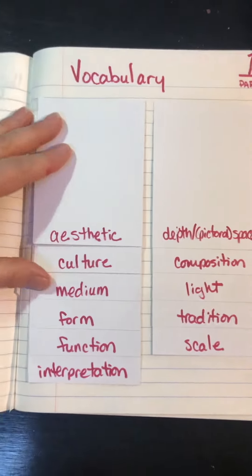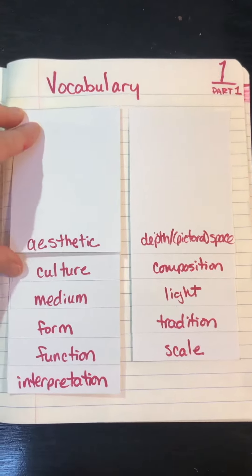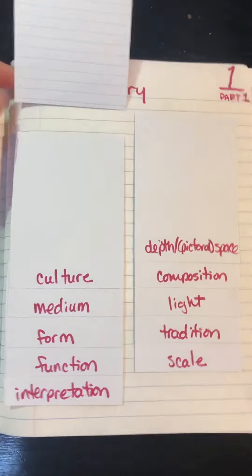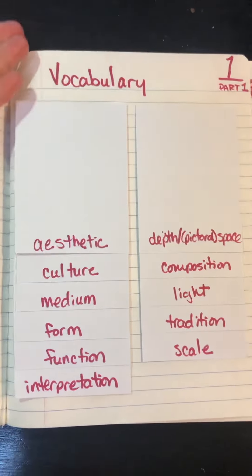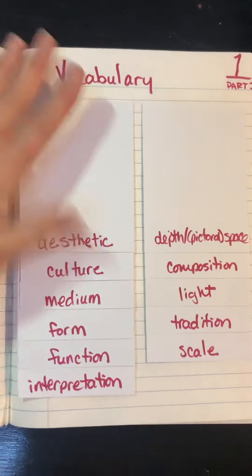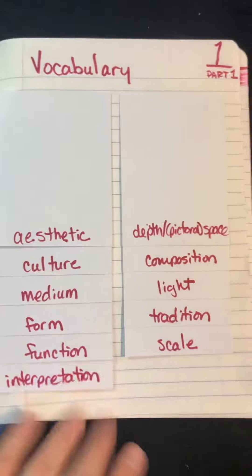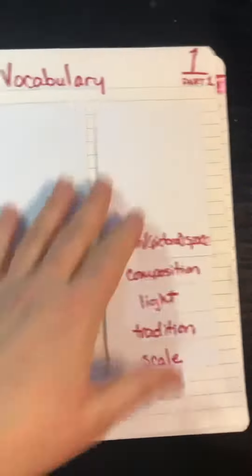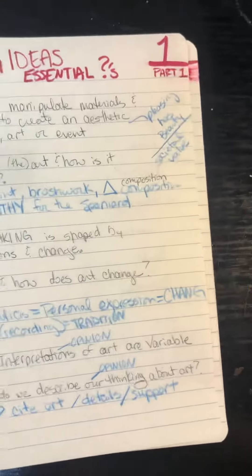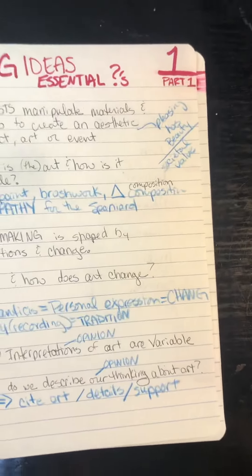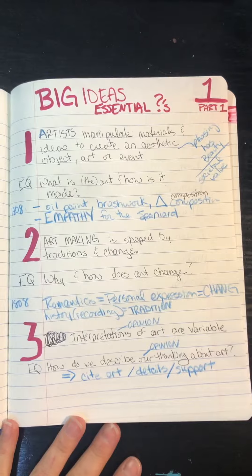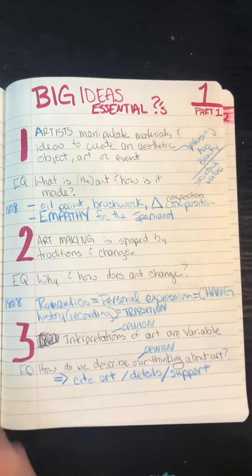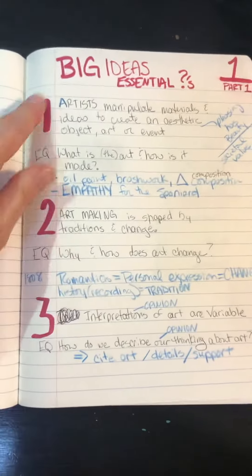For vocabulary, there are several different ways to do it. You can create it however you like — I haven't put the definitions in yet, but this is the way I set it up. And then this is my big ideas and essential questions.